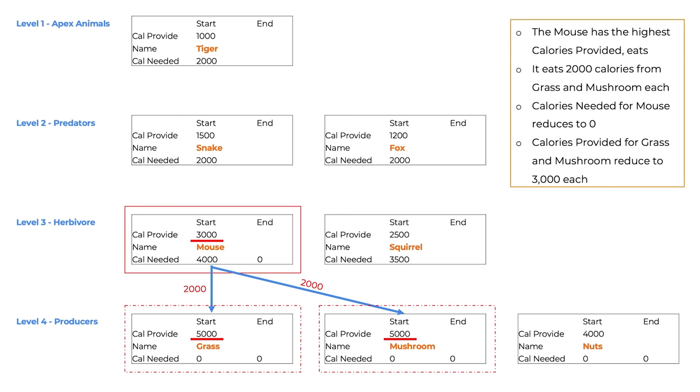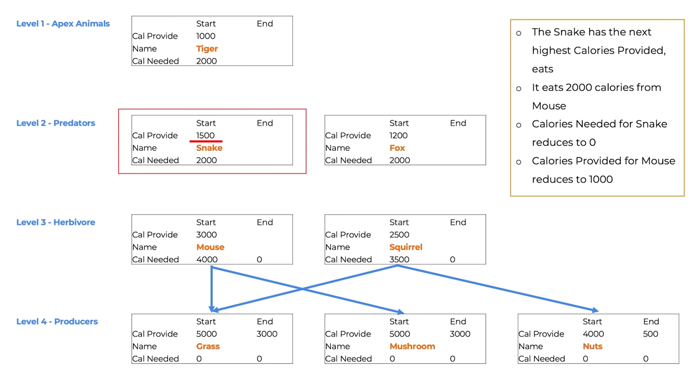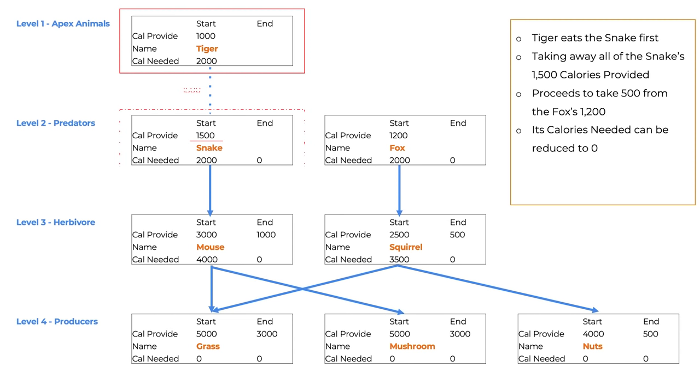The mouse's calories needed is reduced to zero, while the calories provided for grass and mushrooms are reduced to 3,000 each. The next species to eat is the squirrel, with 2,500 calories provided. It should have eaten grass, but grass's new calories provided is only 3,000, so the squirrel picks nuts instead. Squirrel's calories needed comes down to zero, while nuts calories needed becomes 500. The next to eat is the snake, with 1,500 calories provided, most in the field at the moment. It eats the mouse, reducing its own calories needed to zero, while taking 2,000 from the 3,000 of the mouse's calories provided. Then comes the fox, with 1,200 calories provided. It eats the squirrel, reducing its own calories needed to zero, while taking 2,000 from the 2,500 of the squirrel's calories provided. The last species to eat is the tiger.